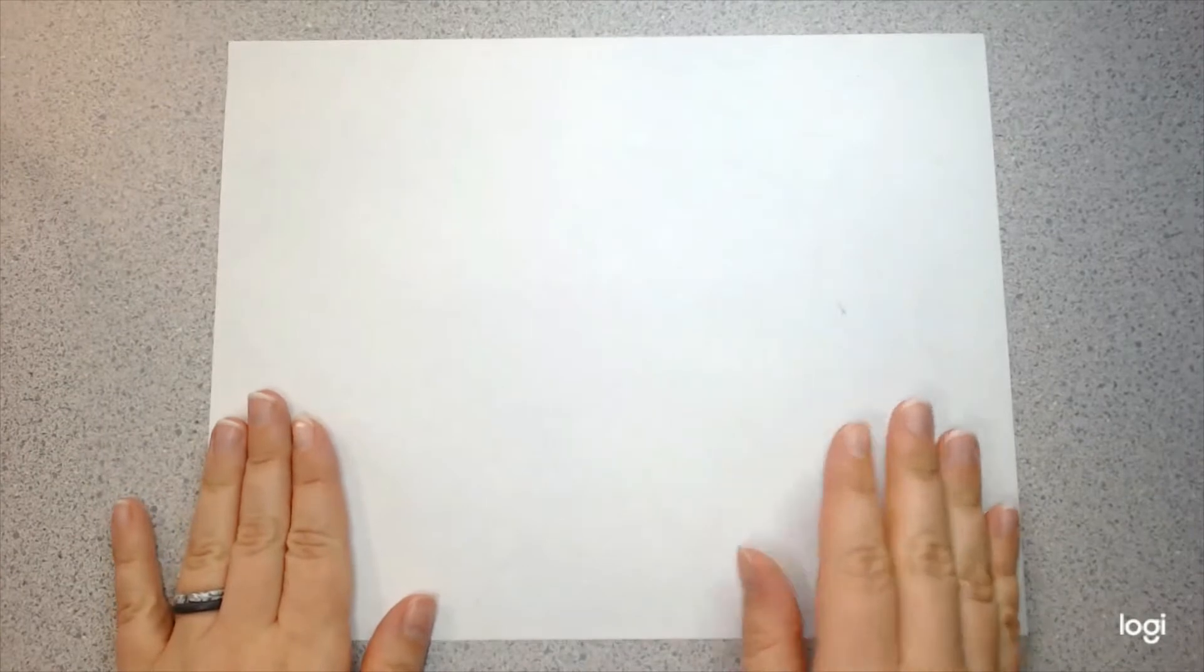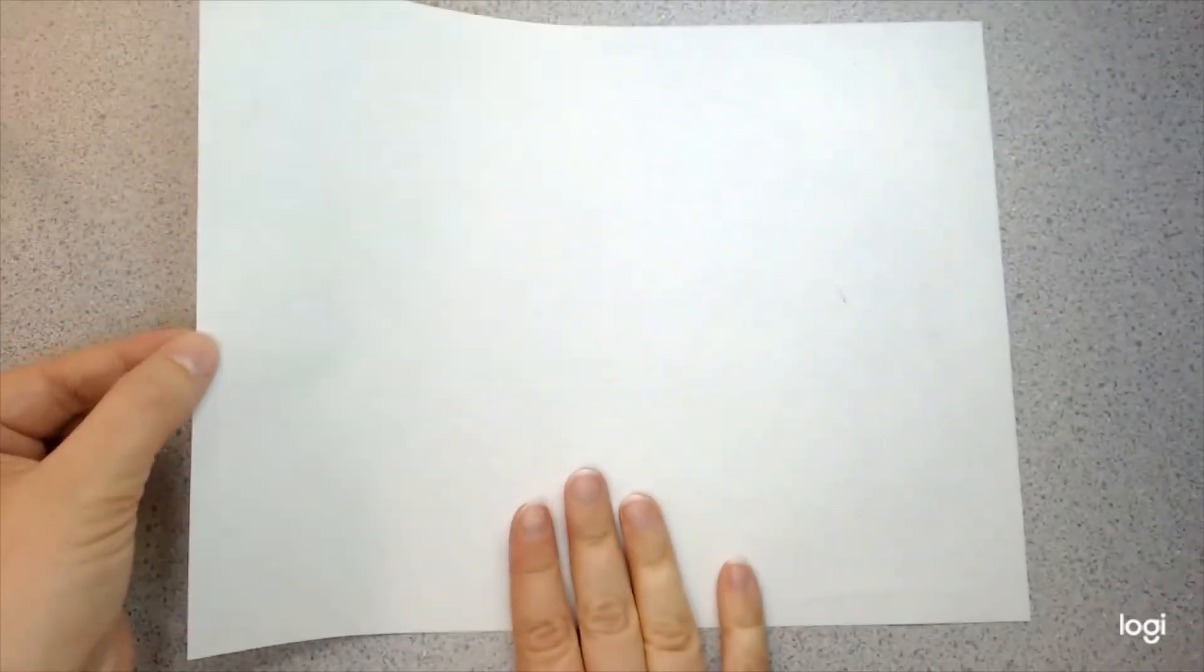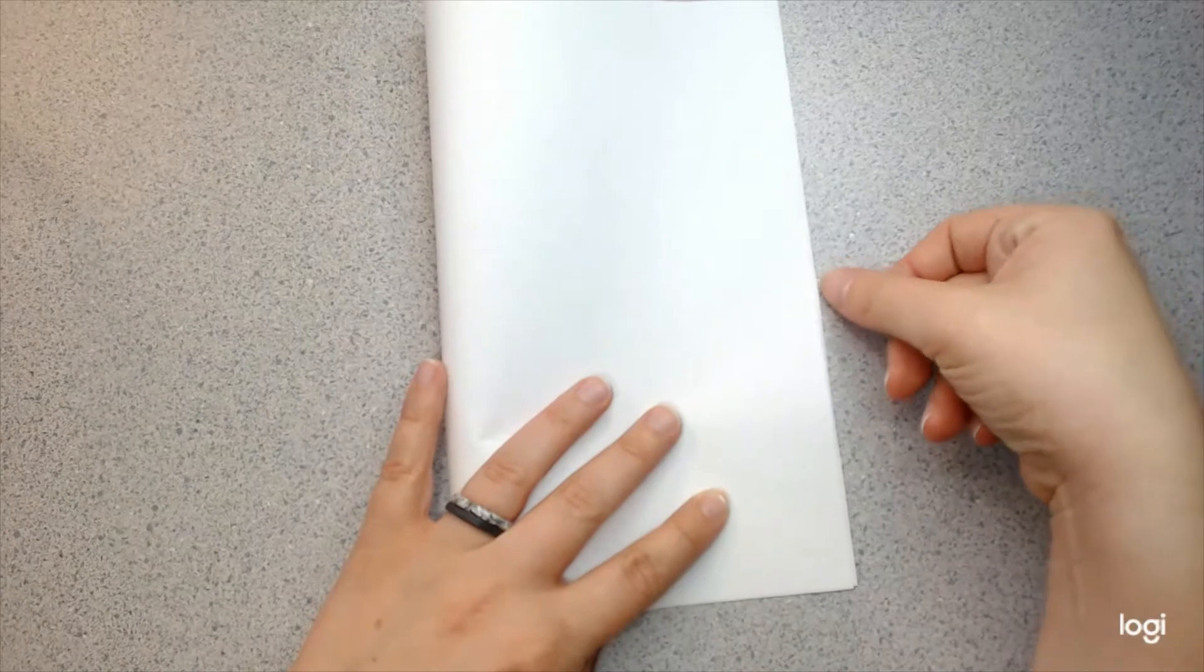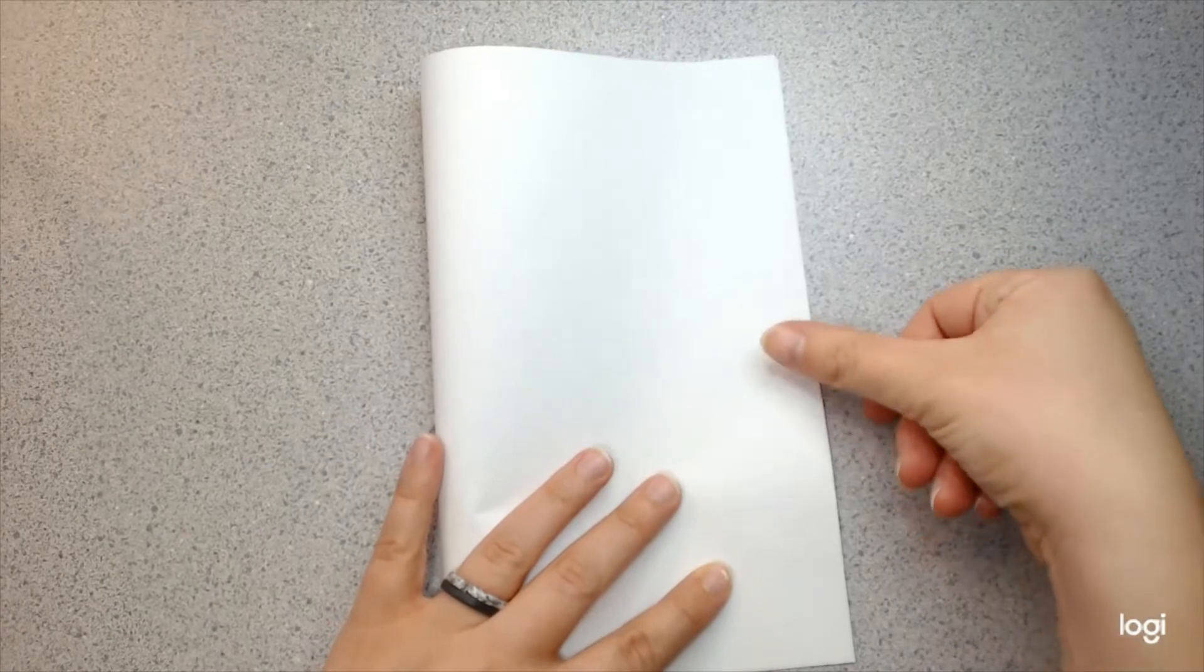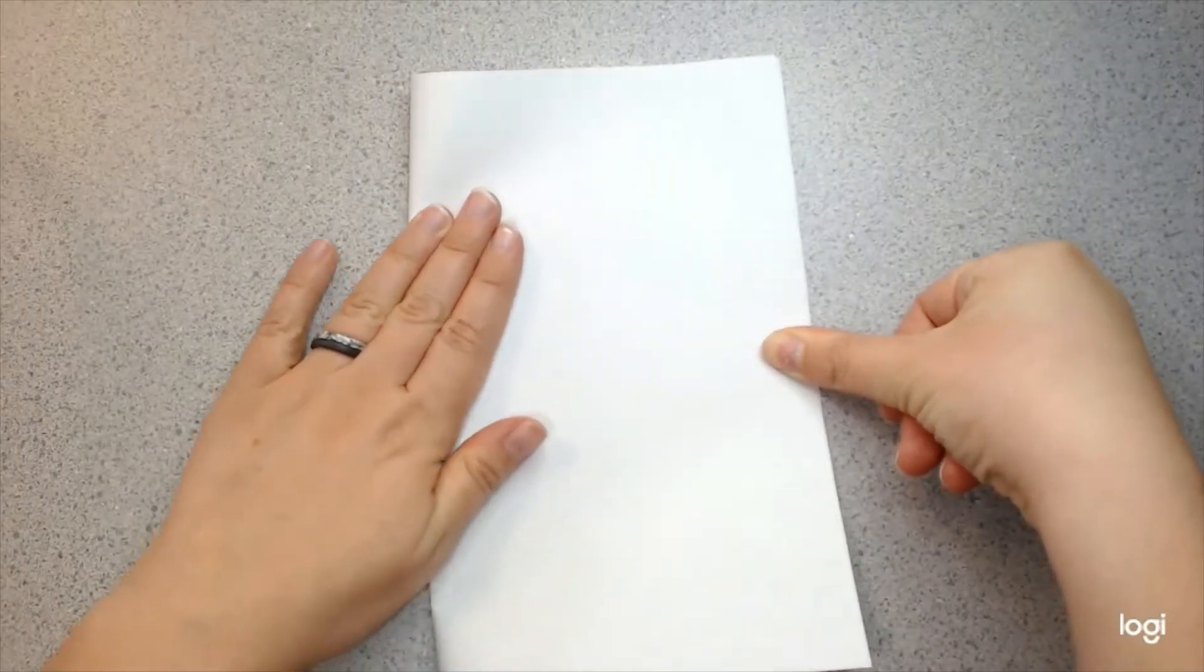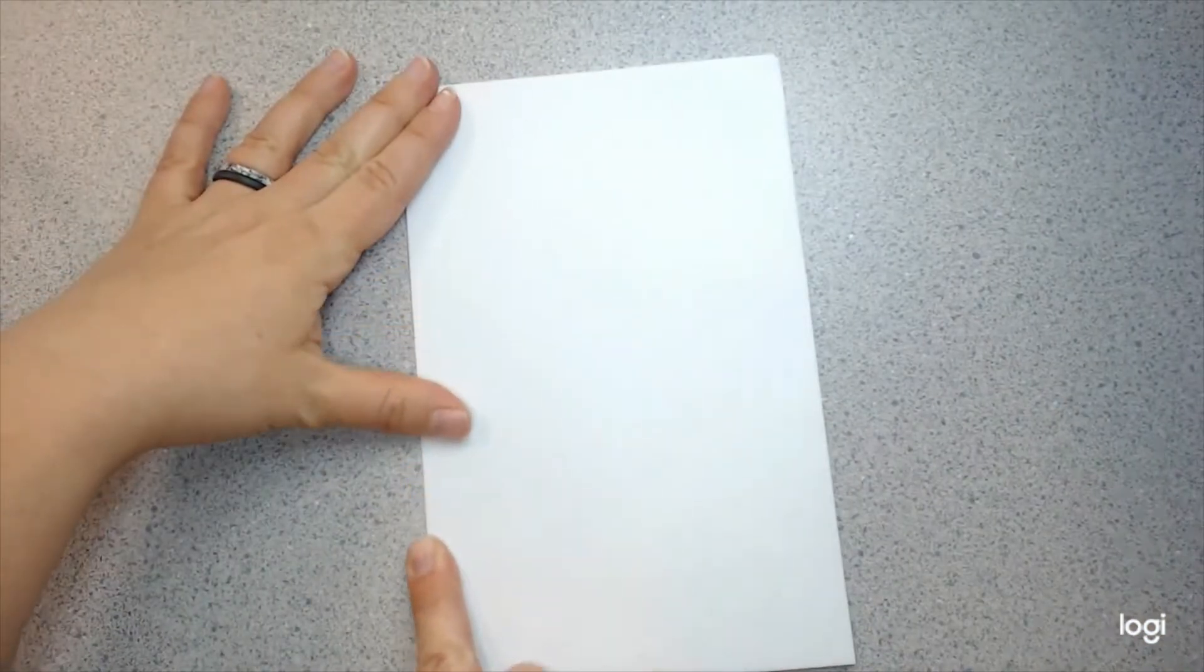Our first step is to fold our paper like a book. This is the horizontal edge of our paper and this is the vertical edge of our paper. We are going to take one vertical edge and fold it so that it meets the other edge just like this. So, you will carefully line up your edges, pinch, and press just like that. So, now you have a book.